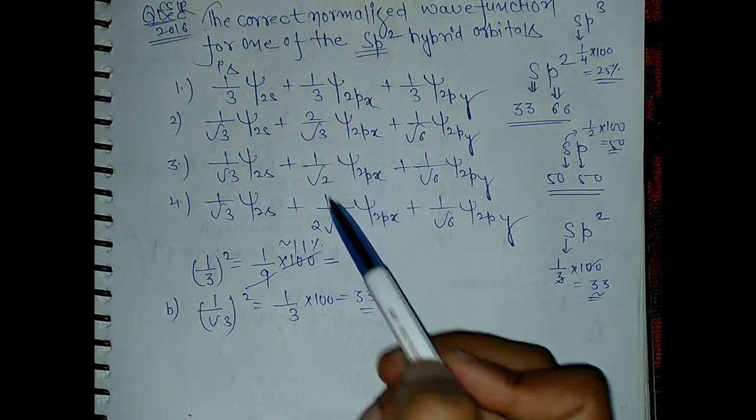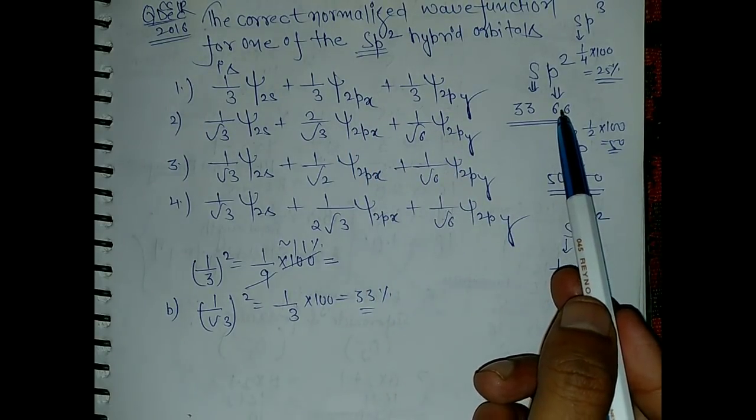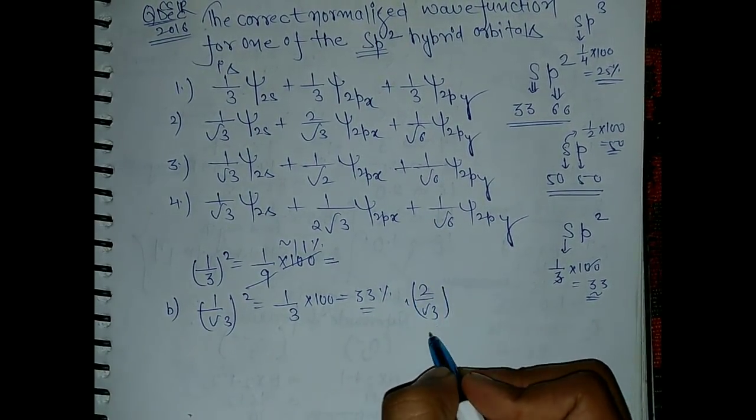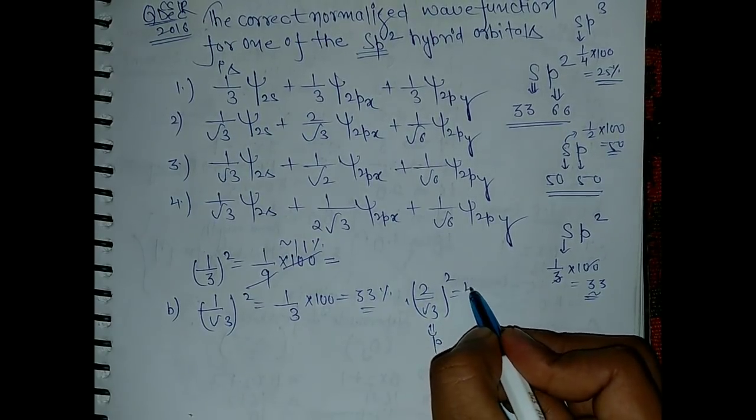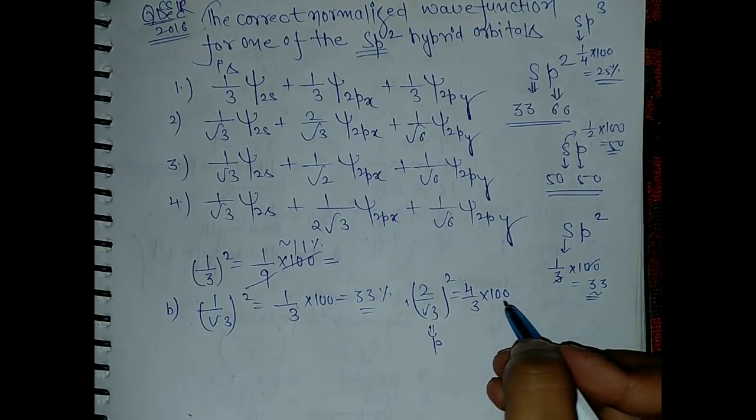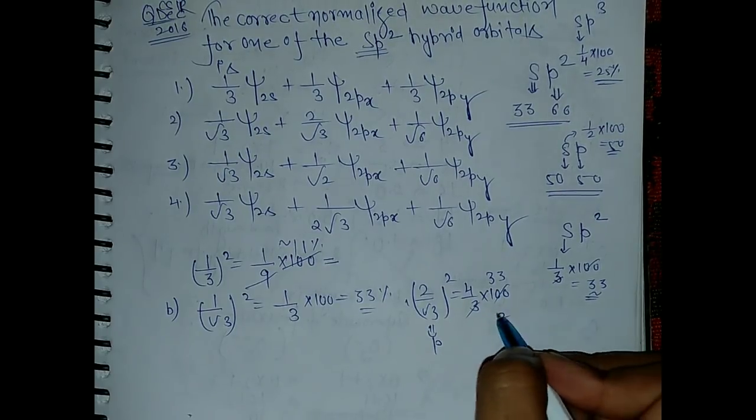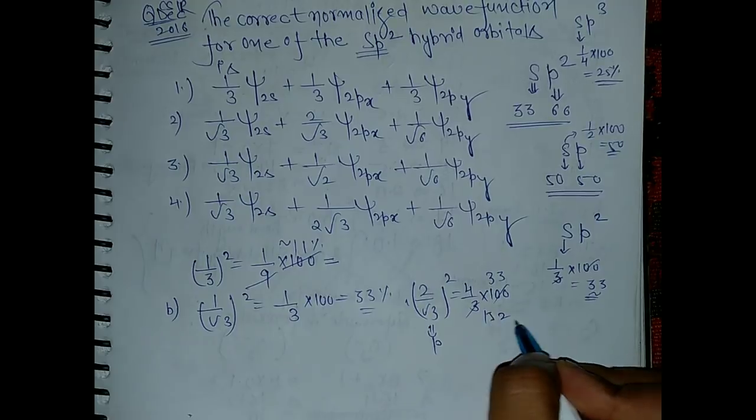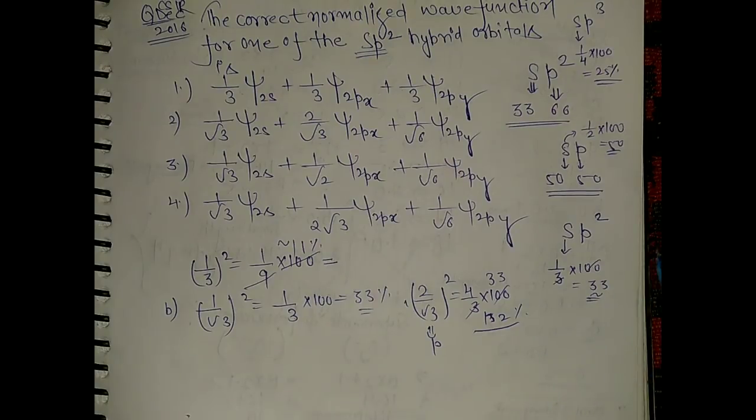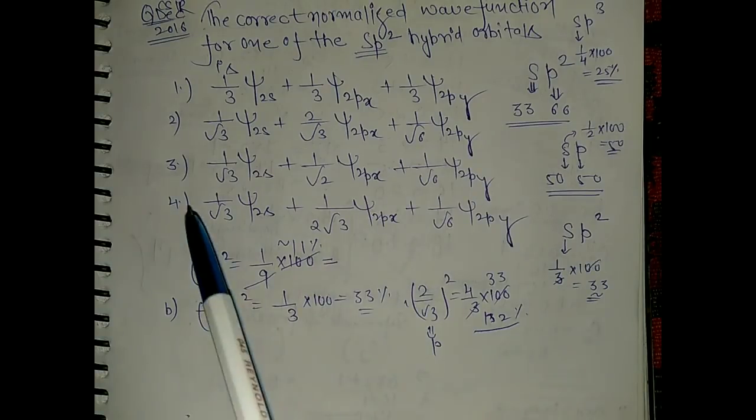Now look for the p orbital. That means these 2 p orbitals should contribute 66%. So you can write this 2 by root 3 square for p. This will be 4 by root 3, this will be 4 by 3 into 100, so this will come around 132%, which is greater than obviously it is not the answer. So there is no need to go for this.